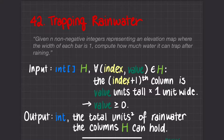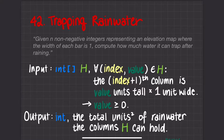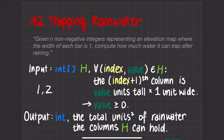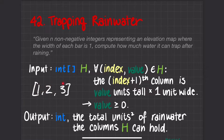Essentially what they're asking is that you're given an integer array — let's call it h. For every single index-value pair in h, the (index + 1)th column is value units tall by 1 unit wide. So if we have 1, 2, 3 as h, then the first column is 1 unit tall, the second column is 2 units tall, and the third column is 3 units tall.